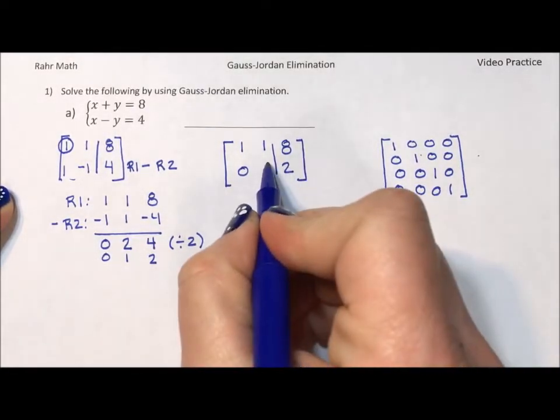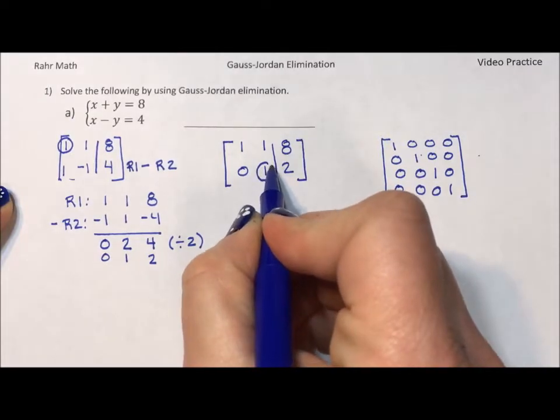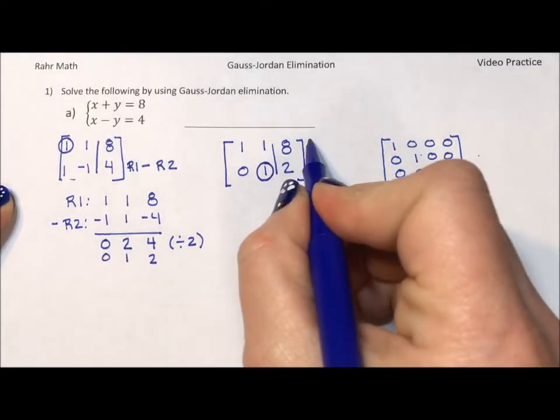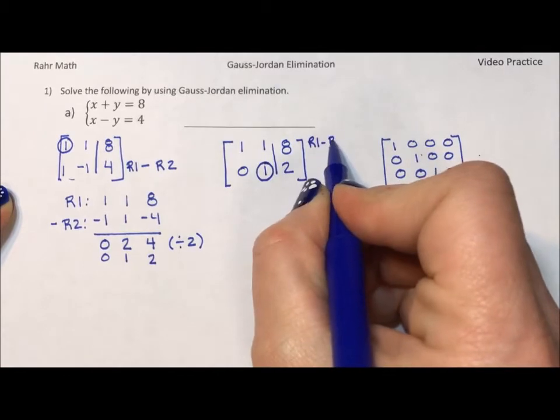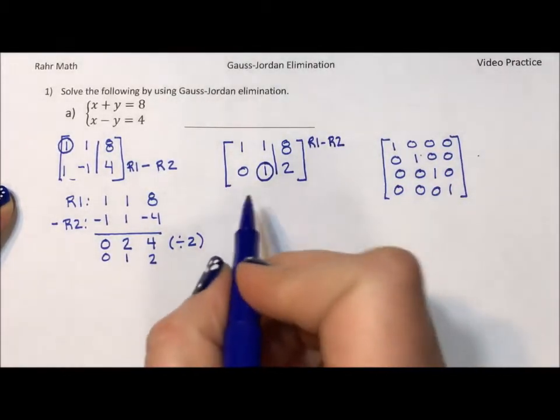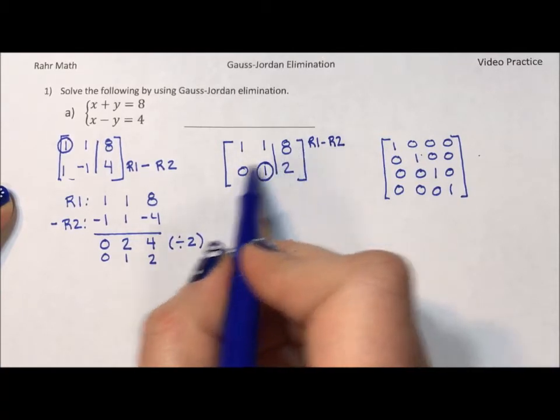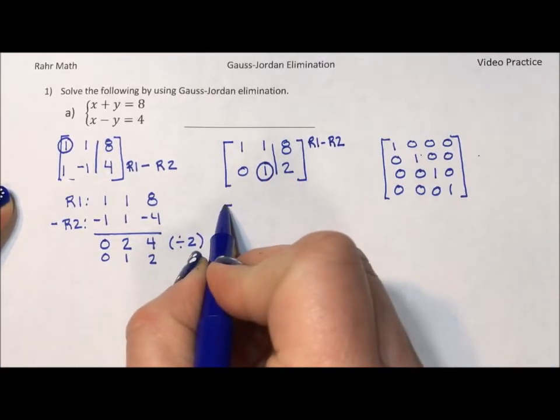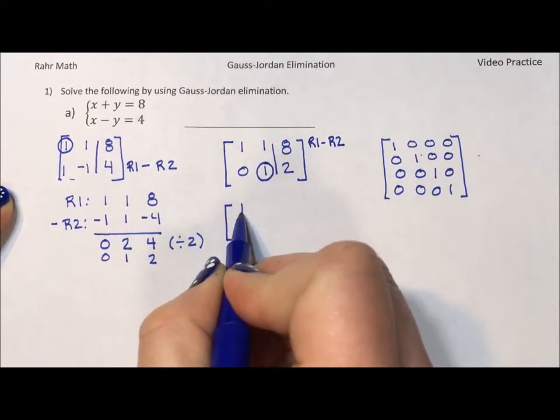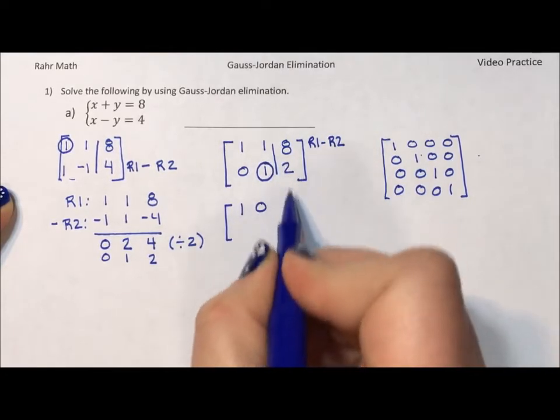And now I'm going to pivot on this one. I'm going to use this one to eliminate that one. So I'm going to say row one minus row two. Again, this time I'm just going to subtract in line because row one is already on top, row two is already on the bottom. One minus zero is one. One minus one is zero. Eight minus two is six.